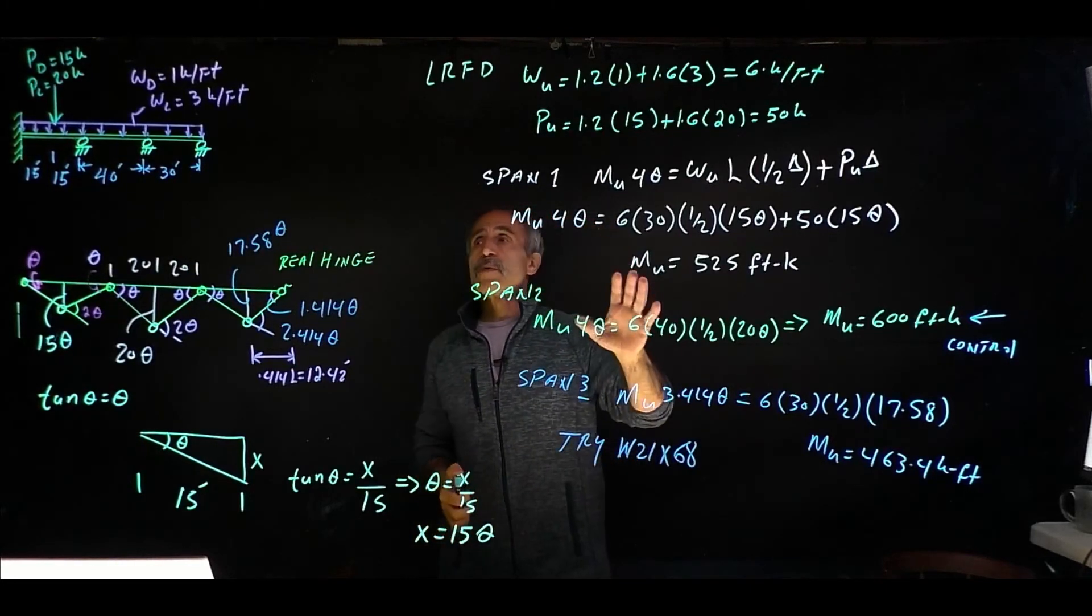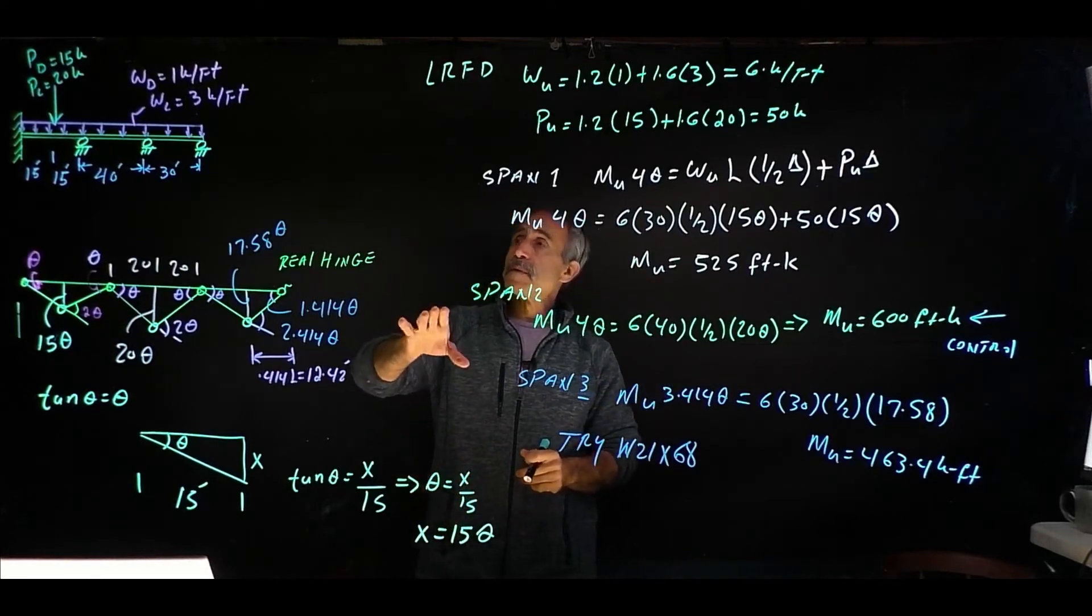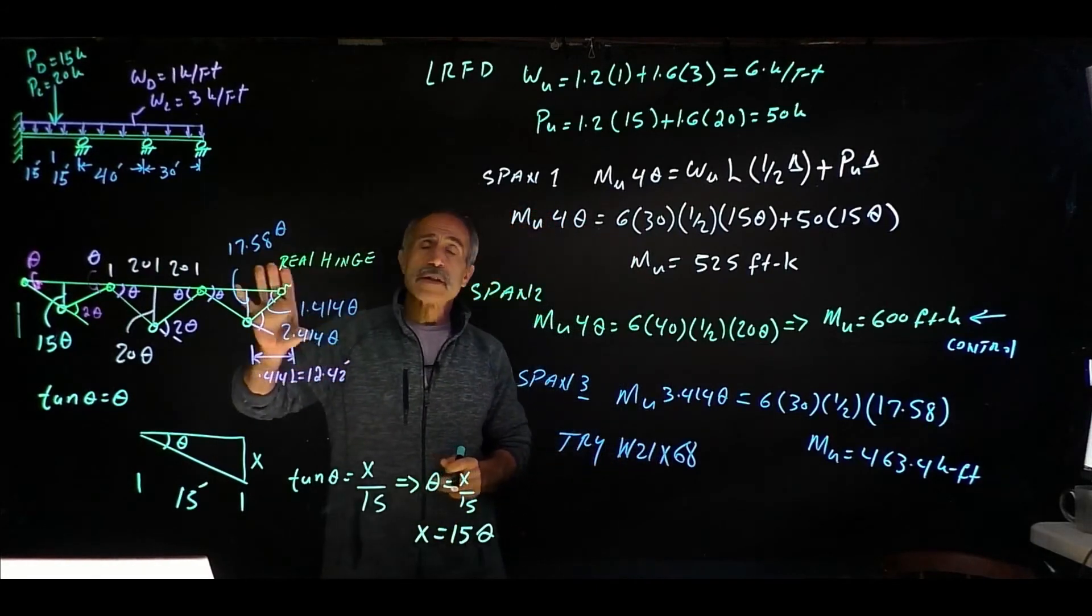And from here on, just like I have other video on steel beam design, you do the same thing. Check for lateral stability and check for shear and all that stuff and basically find out if this selection you made is good enough or you should go higher. So I'm going to erase this and we're going to go ahead and try ASD design using a different method.